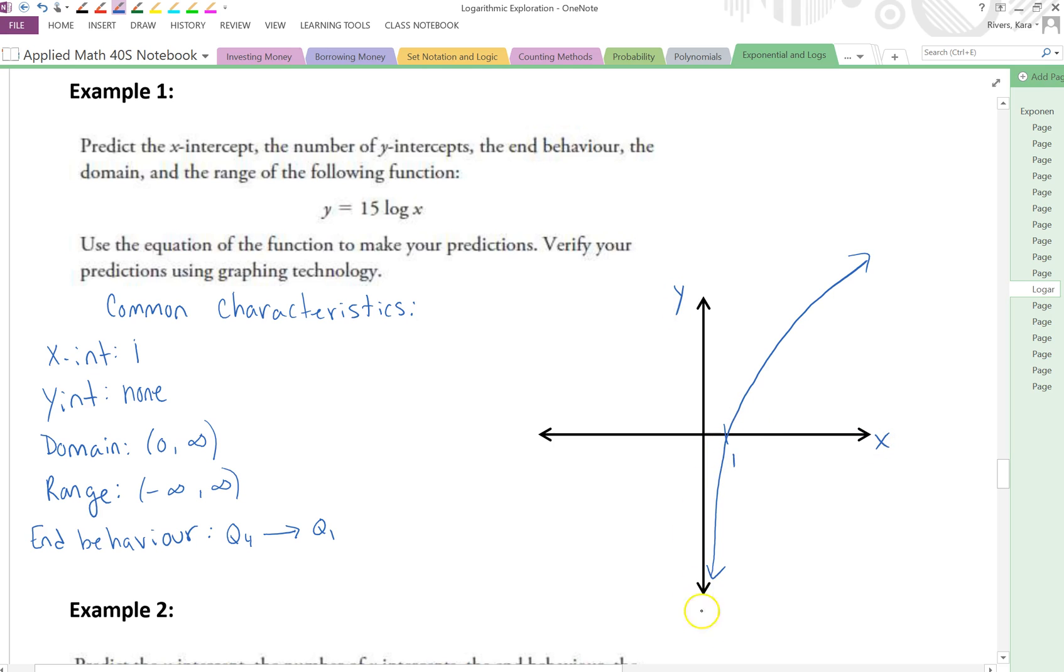So again, this gets really, really close to the y-axis, but doesn't actually touch the y-axis. And remember, when we're talking about our quadrants, this is quadrant 1, 2, 3, and 4. So we're going from quadrant 4 to quadrant 1. Very steep because of that 15 there.